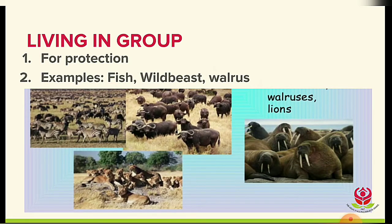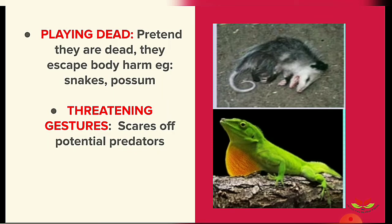Animals also live in groups for protection and to avoid being eaten by predators, and groups help them hunt for more food. Examples include fish, wildebeest, and walrus. Some animals play dead — acting as though they are dead so no one will harm them. Examples are snakes and possums. Finally, threatening gestures are used to scare off predators.